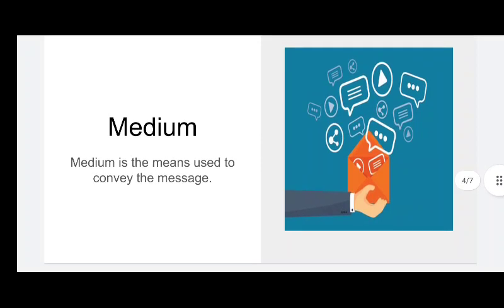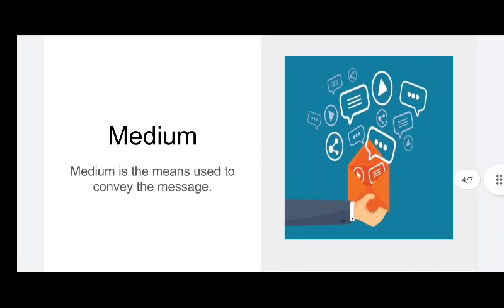Coming on the next — what is medium? For proper communication we need a very good medium. Medium is the means used to convey the message — the sensory route through which the encoder will communicate his message to the decoder. The medium can be print, electronic, or sound; anything can be in the form of medium.